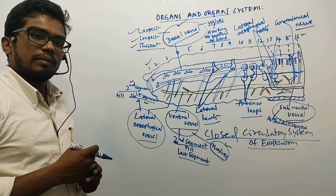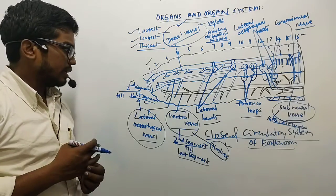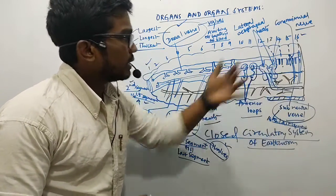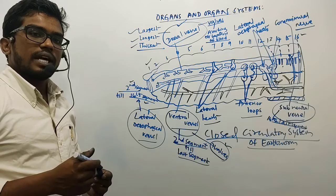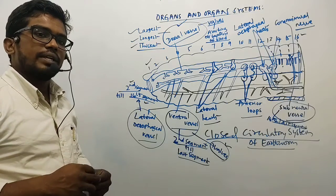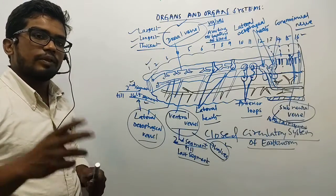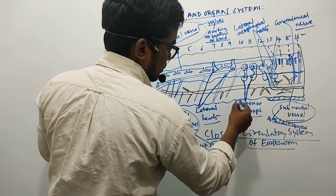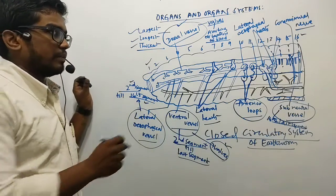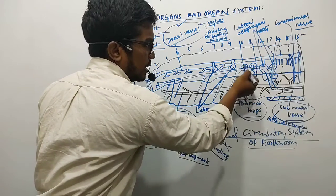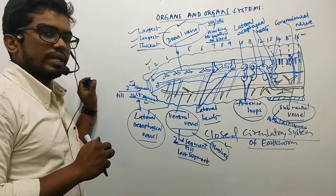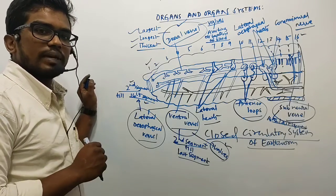We also have the supraesophageal blood vessel, which contains the smallest blood vessels. In the 10th and 11th segments, there are loop-like vessels called anterior loops — these are two pairs of loop-like blood vessels found in those two segments.